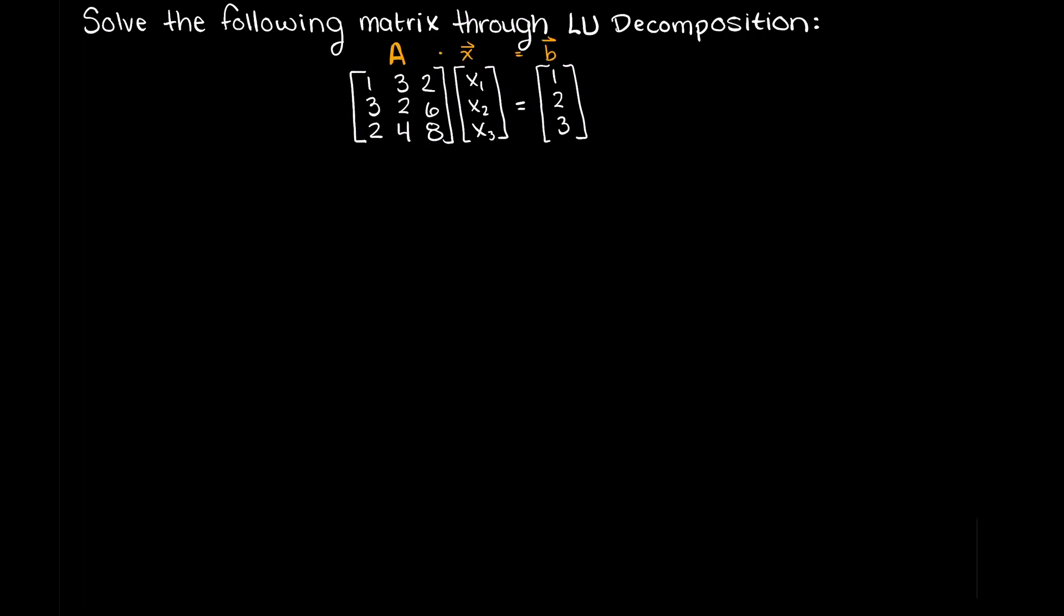In our first steps of solving a matrix using LU decomposition, we do not actually need our coefficient matrix b, so we'll just set that aside for later. We need to convert this A matrix into a U matrix, or an upper triangular matrix, while recording our applied scaling factors into a lower triangular matrix which we call L.